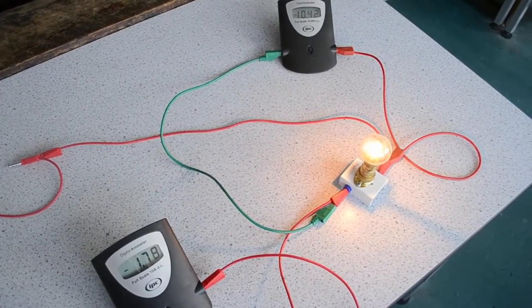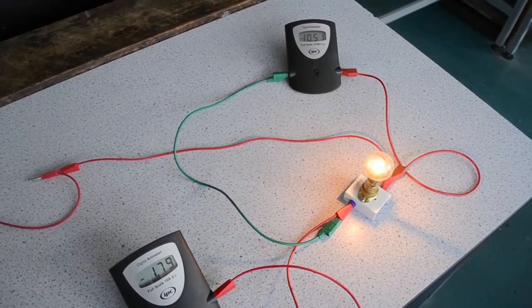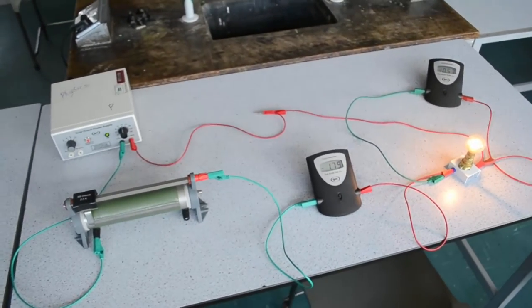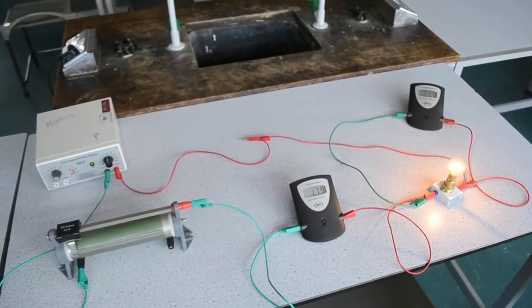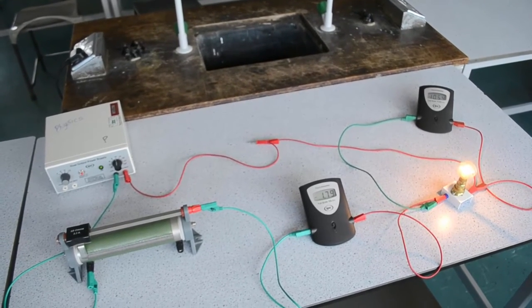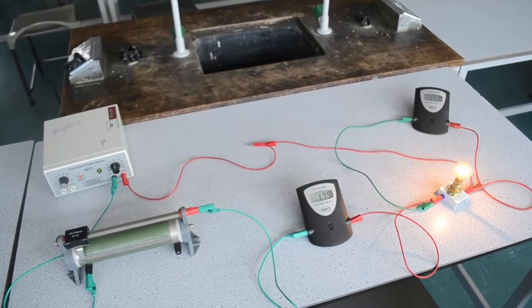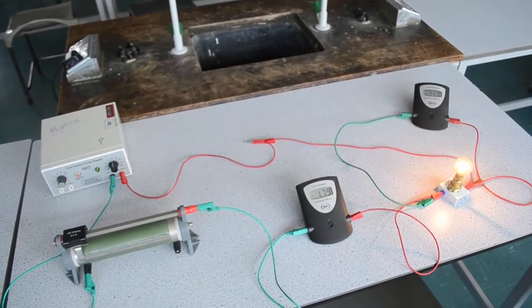You can see the light bulb lighting up again here. So you'll be left with a results table containing a number of voltage and current readings, including some negative voltages and negative currents.